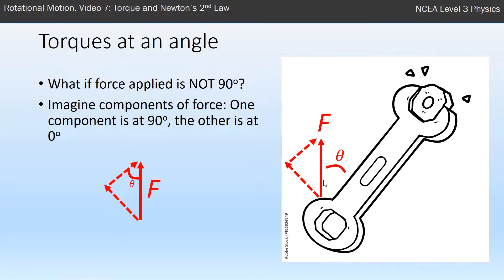One of those forces is 90 degrees. The one that's 90 degrees is going to supply our torque. The one that is parallel to the spanner is not going to do any turning at all. So we need to work out the size of this perpendicular one.